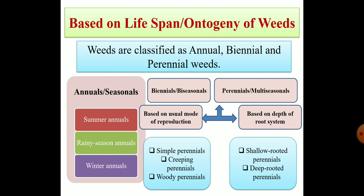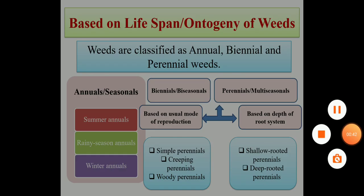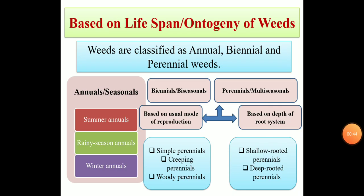As you can see in this slide, weeds are classified into three categories mainly on the basis of lifespan and ontogeny, and these are annual weeds, biennial weeds, and perennial weeds. Annuals are also referred to as seasonals, biennials are referred to as biseasonals, and perennials are referred to as multiseasonals.